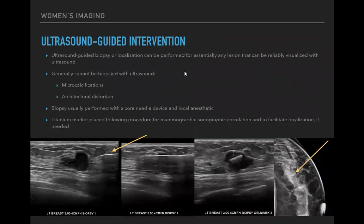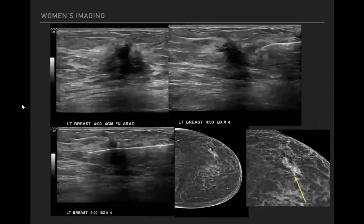Biopsy is performed with a core needle device using local anesthetic — lidocaine and lidocaine with epinephrine — with a small skin incision. The cutting needle with a trough snaps forward to take a core through the lesion. A titanium marker is always placed afterward for mammographic-sonographic correlation and to facilitate surgical localization, especially if a patient undergoes neoadjuvant chemotherapy and the lesion shrinks — the only remaining landmark is the titanium marker.